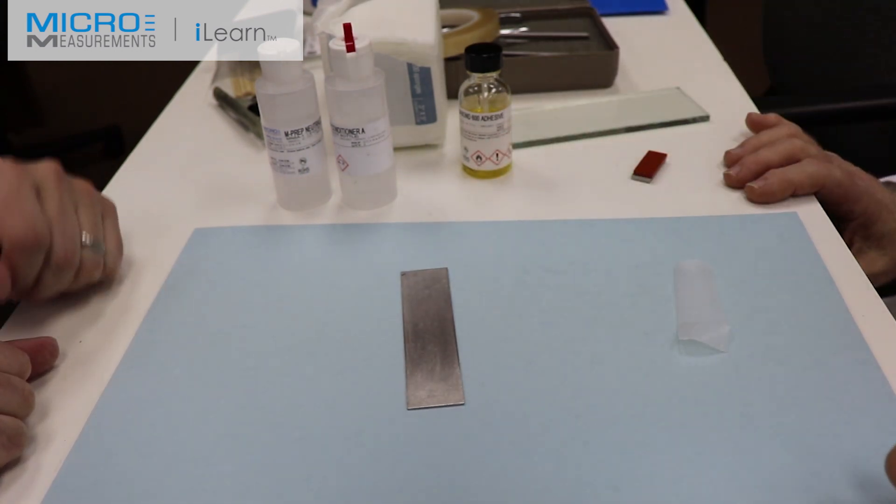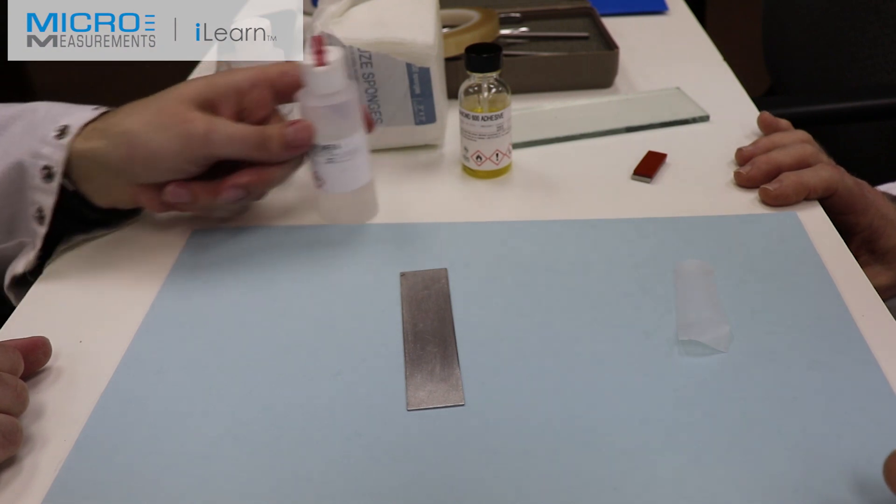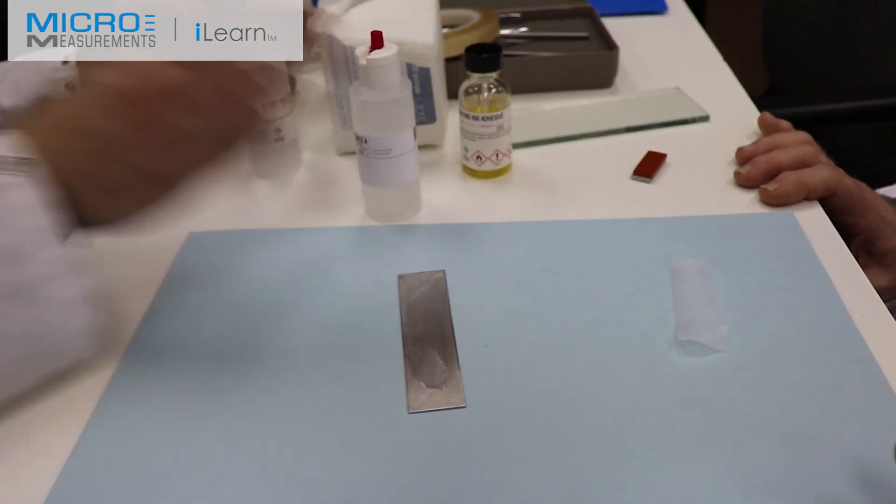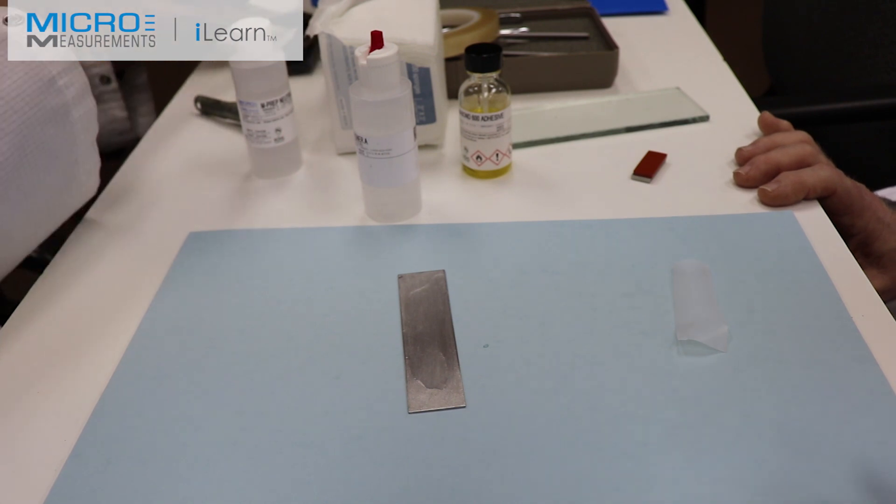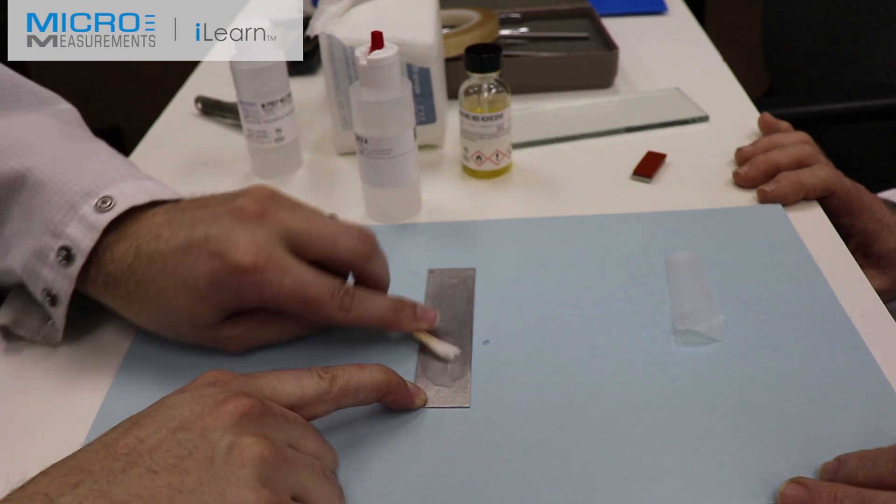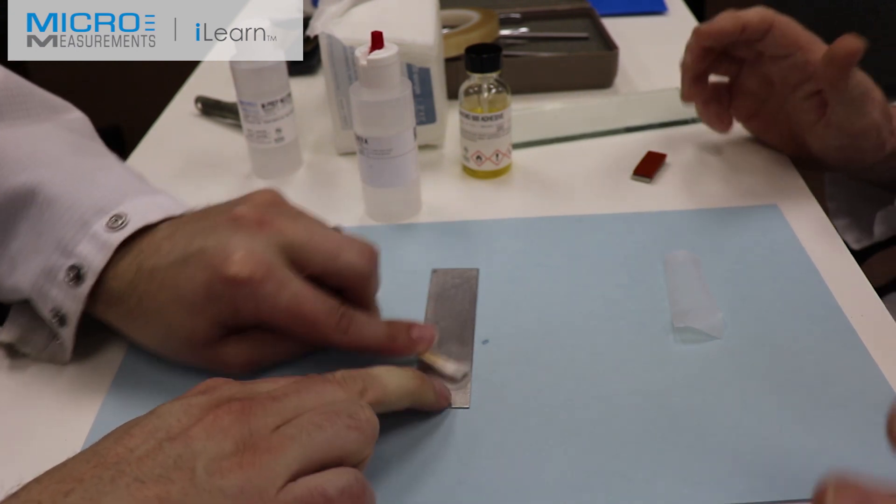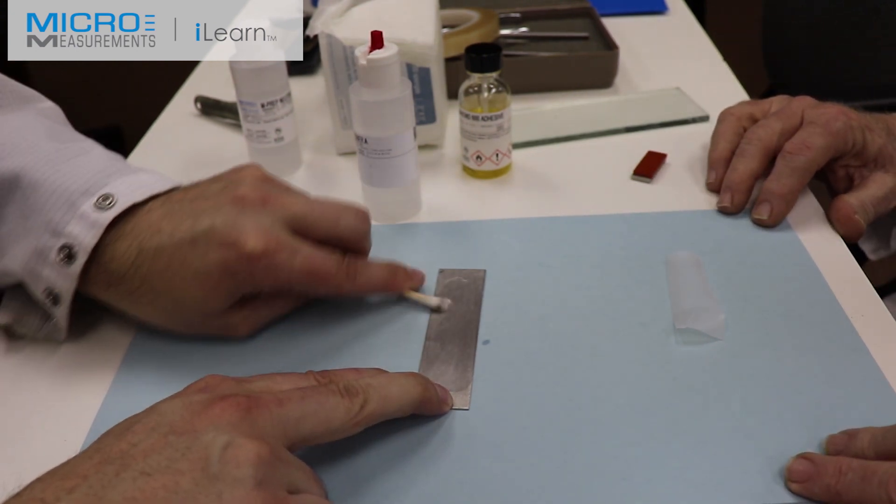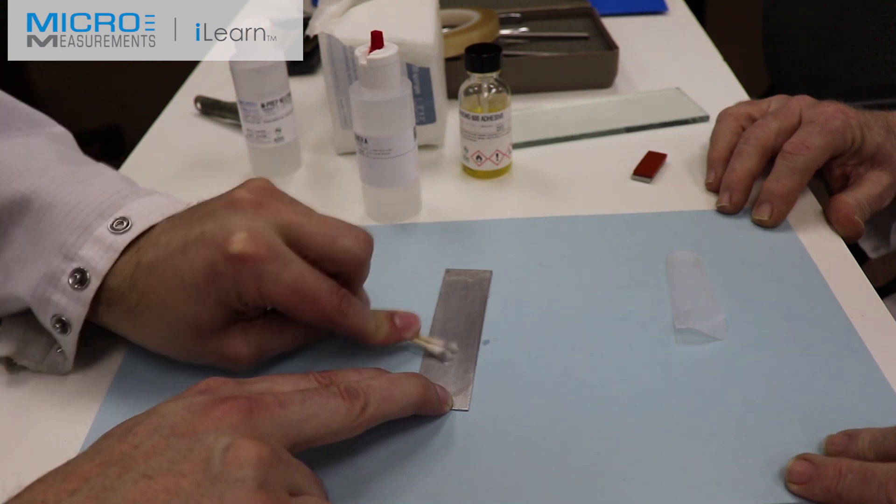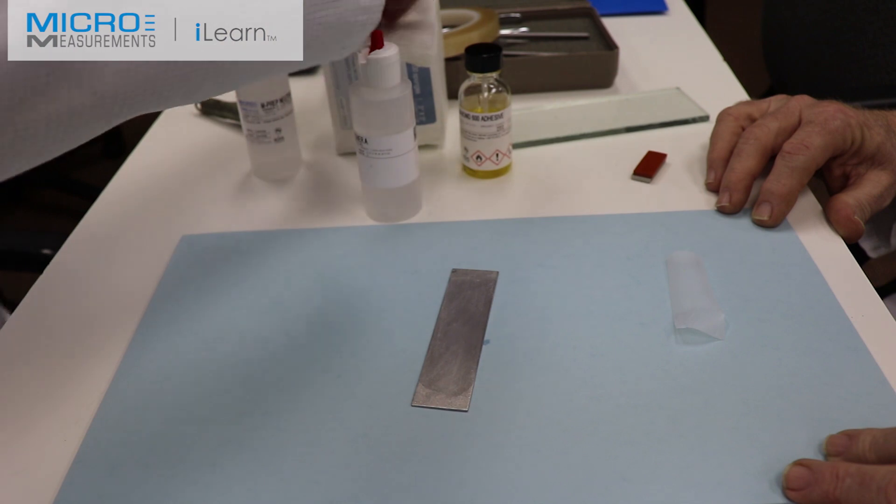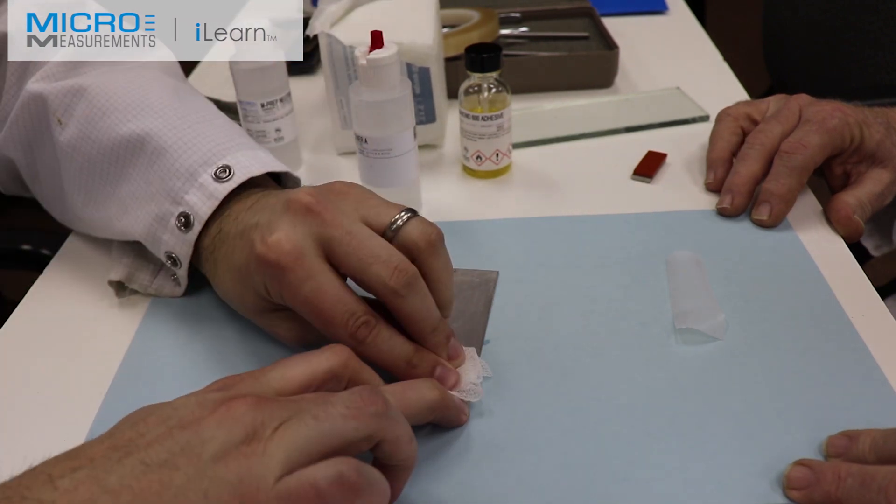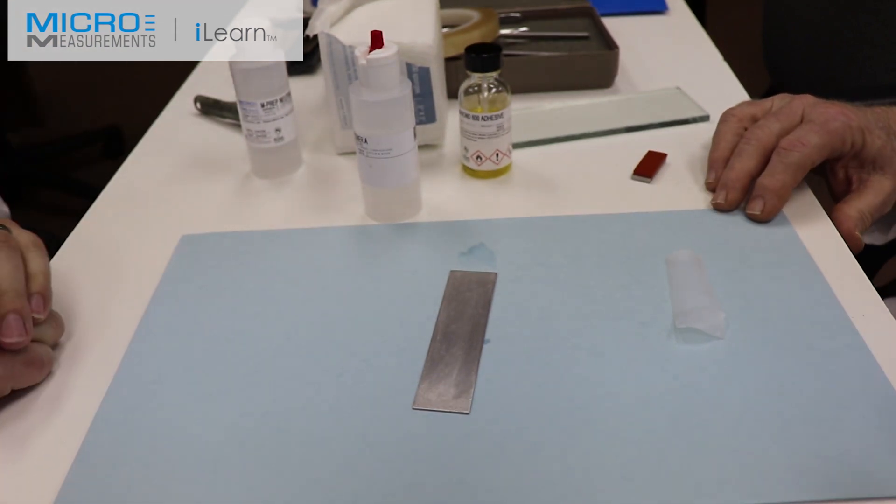Alright, next step, we'll take the Conditioner A and a cotton tip applicator and we're going to scrub the surface of the beam. This is going to get any of that loose material that you've abraded away and going to remove it or scrub it from the surface. Having completed that scrubbing, take another clean dry gauze sponge, fold it into quarters, and with a single wiping motion absorb that material.